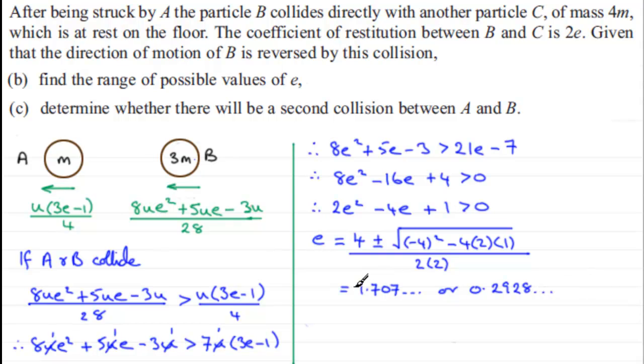Now we know that e cannot be equal to 1.707, purely because e always has to be a value between 0 and 1. So we can rule this one out. And what about 0.2928 and so on? Well, the point was, in part b, we found the possible range of values for e.